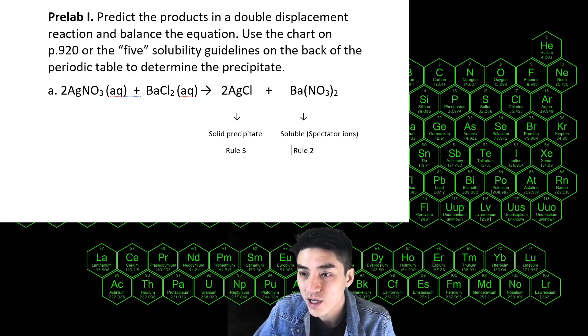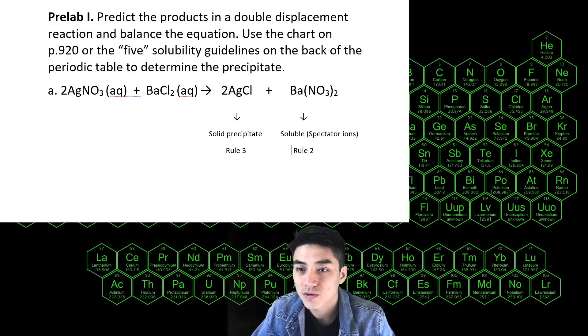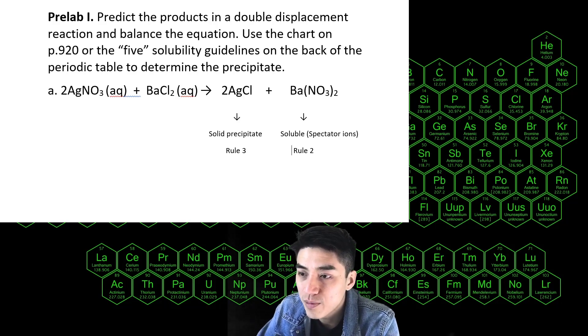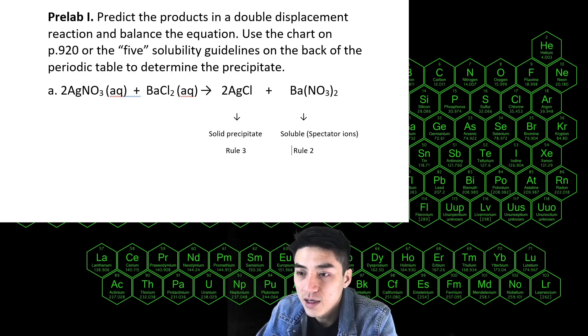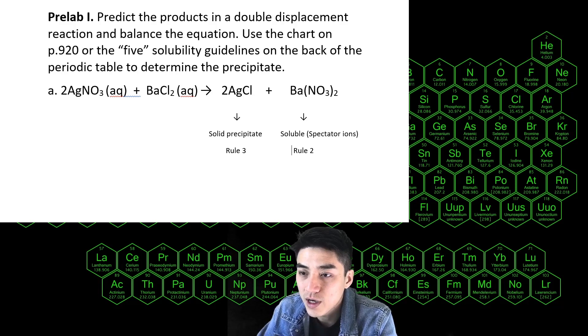So let's see pre-lab 1a together. I wrote out the balance equation. It's a double displacement reaction so you get silver chloride and barium nitrate to come out, and by rule three silver chloride is your solid precipitate and by rule two barium nitrate is soluble. These are the spectator ions—they dissolve in water.